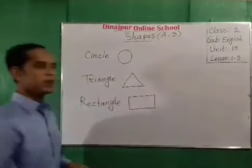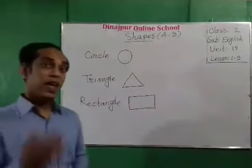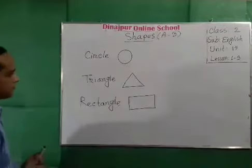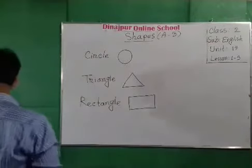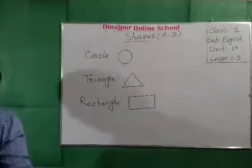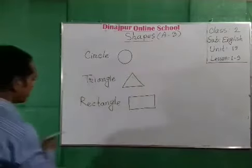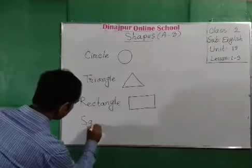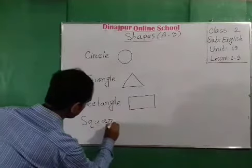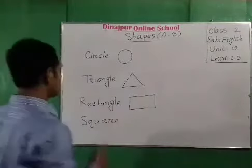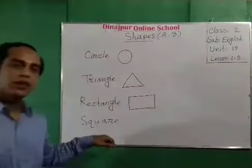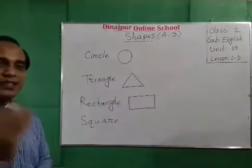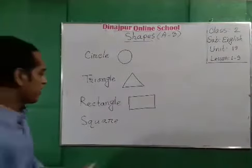Good. Okay students, now I write down another shape's name. Students, what is that I write down? Yes, square. Square.